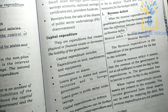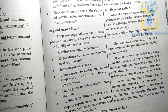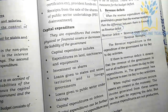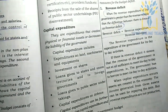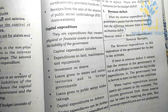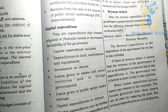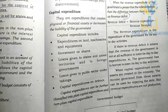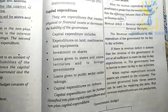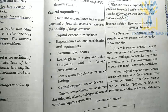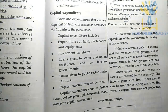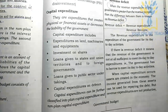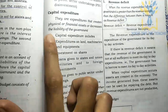Capital receipts also include small savings like PPF. Capital expenditures are expenditures that create physical or financial assets or decrease liabilities.